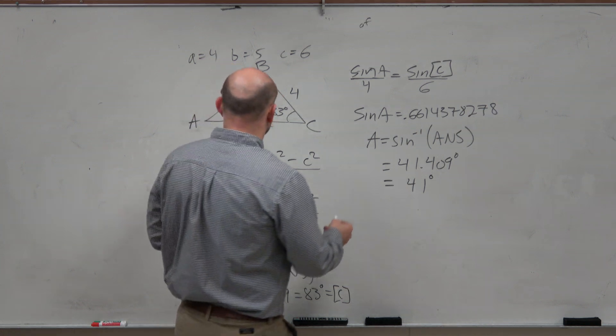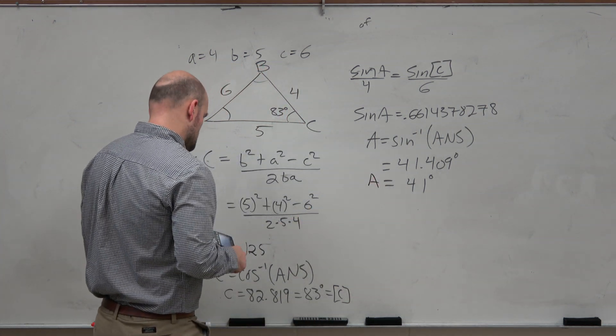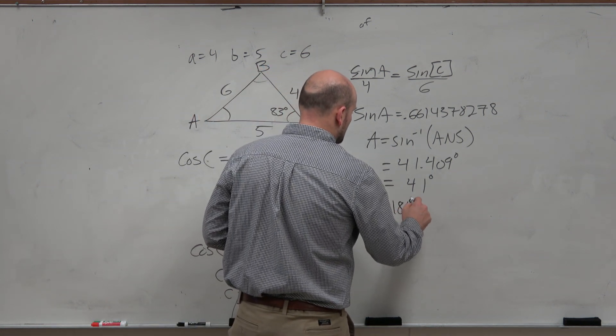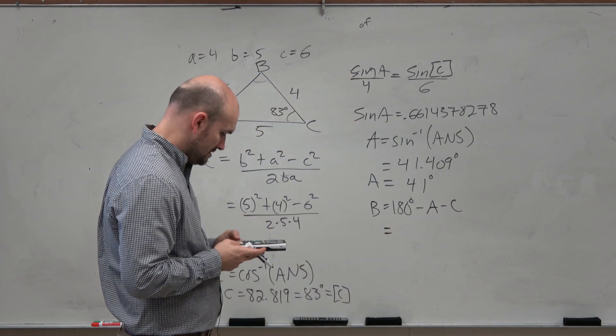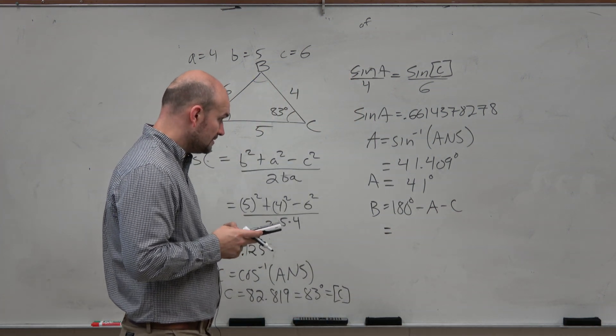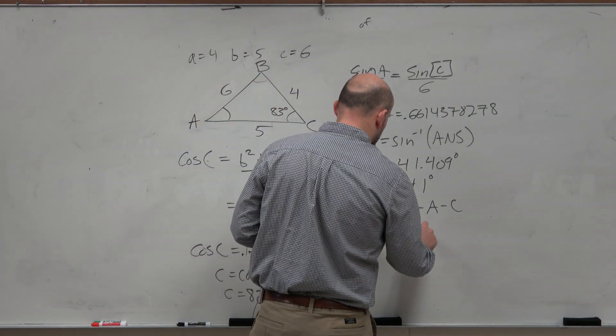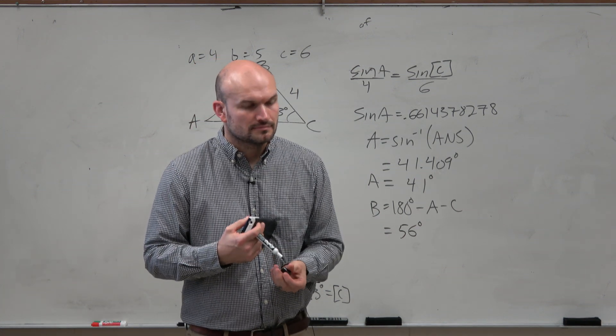And then we can say angle, that's angle A. We already find C, so therefore, B equals 180 minus A minus C. So I'll do 180 minus 83 minus 41. That's going to be 56 degrees. And that is with rounding for the angles to a whole.